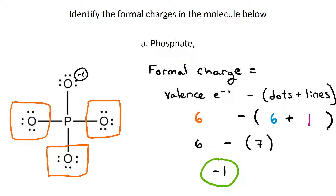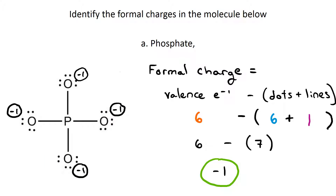So that oxygen has a negative one charge. If you look at the other three oxygens in the molecule, they all are in the same case. They're all oxygens — they have six valence electrons, six dots and one line. So by the formula, they all have six minus seven, or a negative one charge on them.